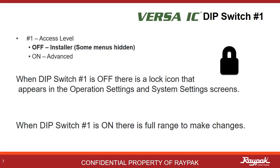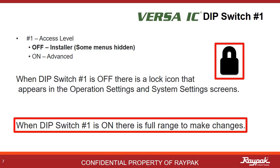Dipswitch number one is a limit switch for the access level. This comes in handy when there is the potential for untrained hands working on the equipment. When the access level is limited, the lock icon will show on some of the screens. Turn Dipswitch number one on to regain full menu access.